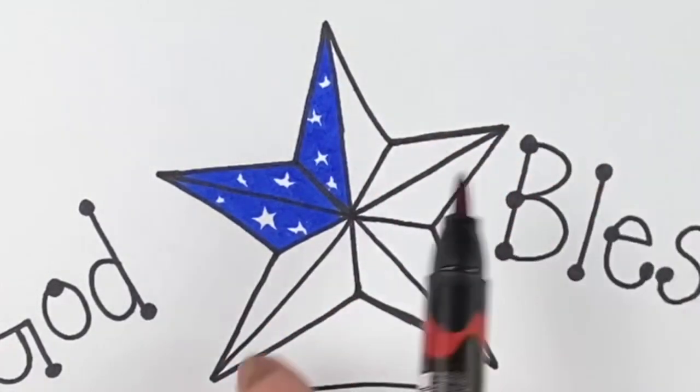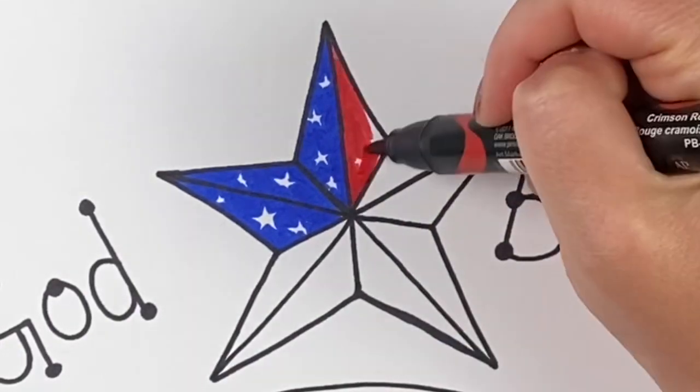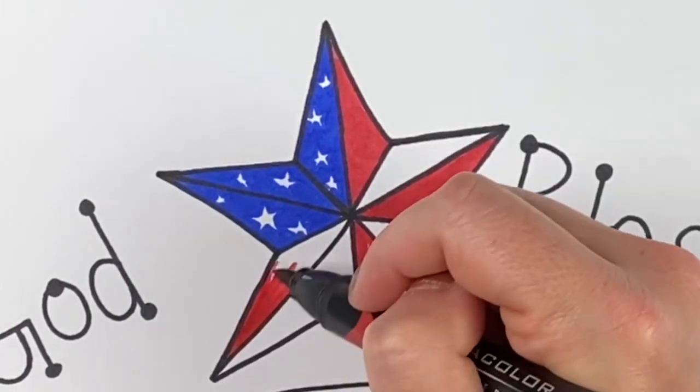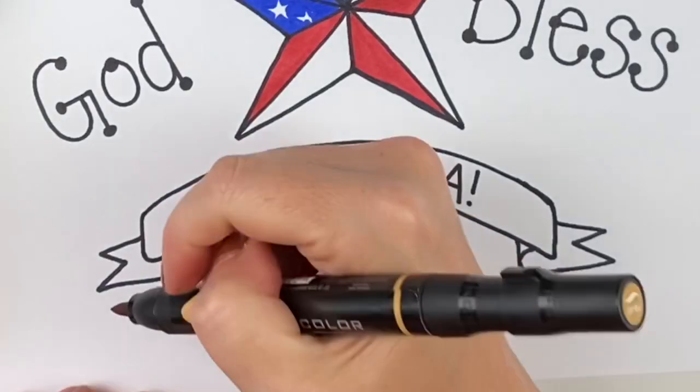So now I'm going to go in and make every other space red because that's going to give the impression of the red and white stripes. And the cool thing about this star that we drew is it feels very three-dimensional. So it really has a really cool look.